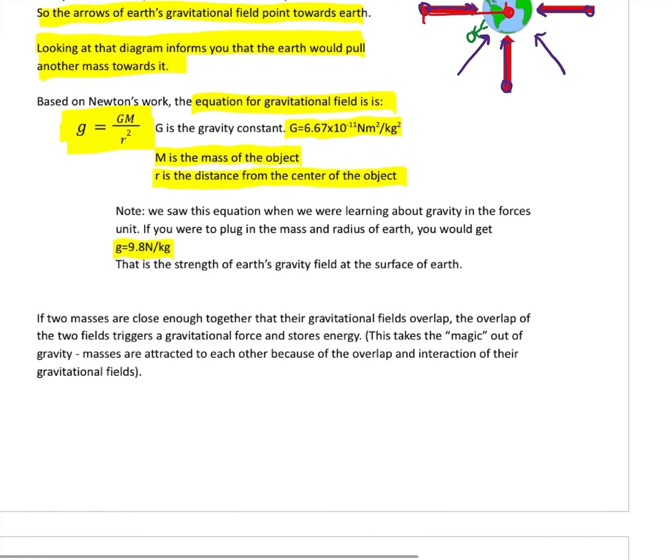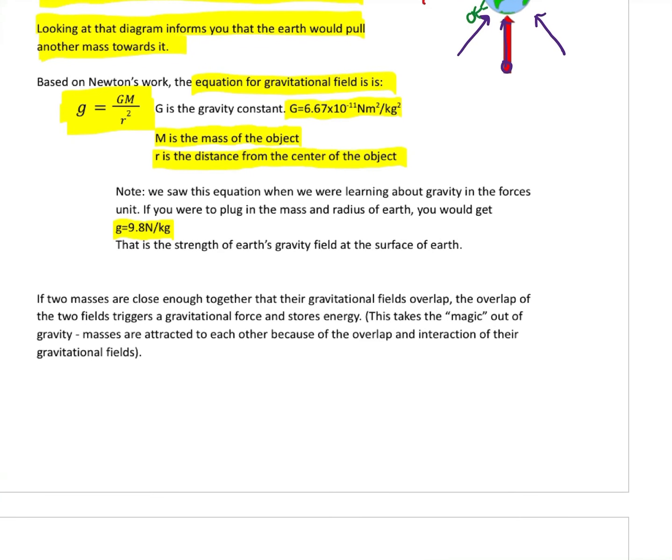The invisible field, because gravity is attraction, is going to be pointing towards the mass. Now to get the force, that's what Newton didn't like. What field theory says is that we have - if we have two of these masses and if they're close enough together that their gravitational fields overlap, it's the overlap of these fields that triggers a force. And we'll come back to it in grade 12, the overlap of the field also stores energy.